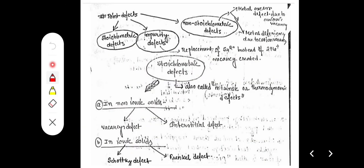Point defects can be classified as: stoichiometric defect, where the ratio of cation to anion remains constant; impurity defect, where there is replacement by a foreign ion causing deviation due to impurity; and non-stoichiometric defect, where the cation-anion ratio is not the same.